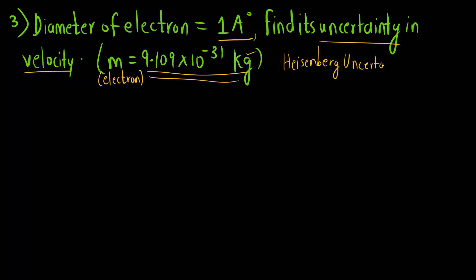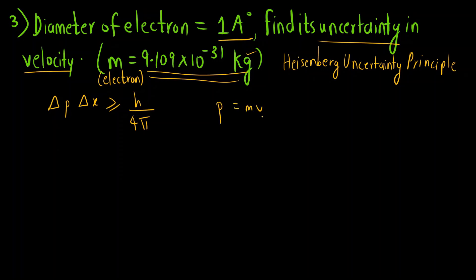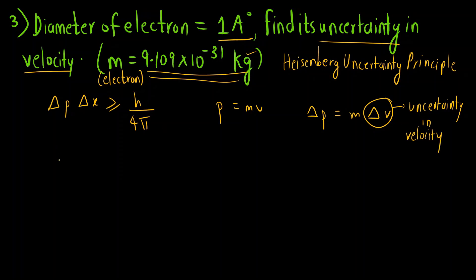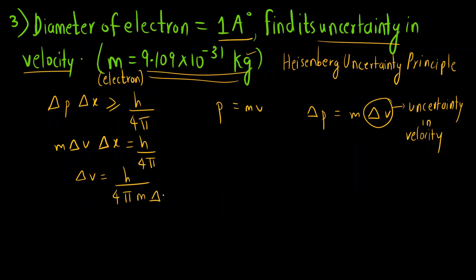Heisenberg's uncertainty principle states that it is not possible to simultaneously determine the position and momentum: Δp × Δx ≥ h/4π. For convenience we treat it as equal. Since Δp = m × Δv, we get: m × Δv × Δx = h/4π, so Δv = h / (4π × m × Δx).